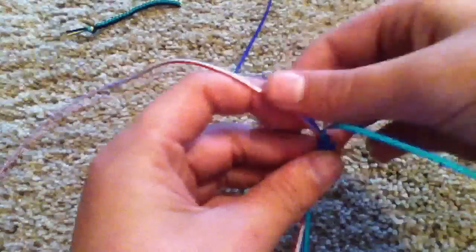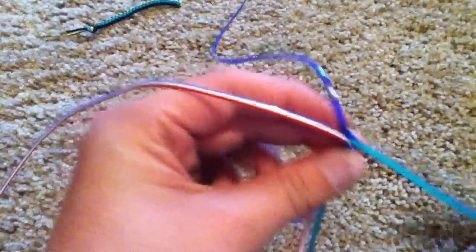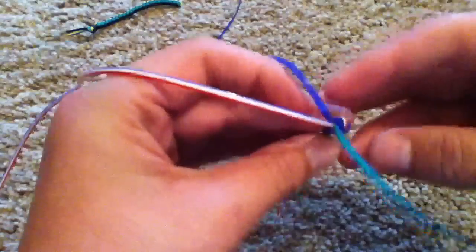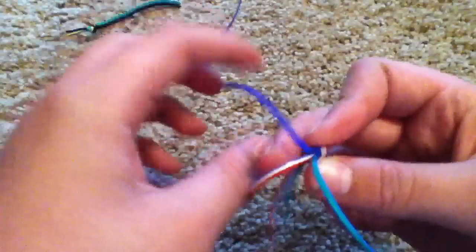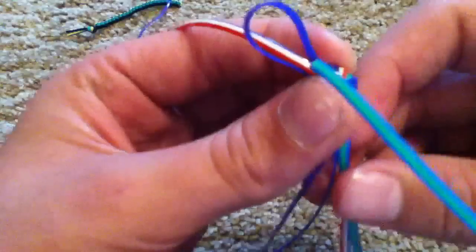For this you'll need a top string, which you'll always use first. And then you'll alternate between these. So, you make a loop over the first string like that.